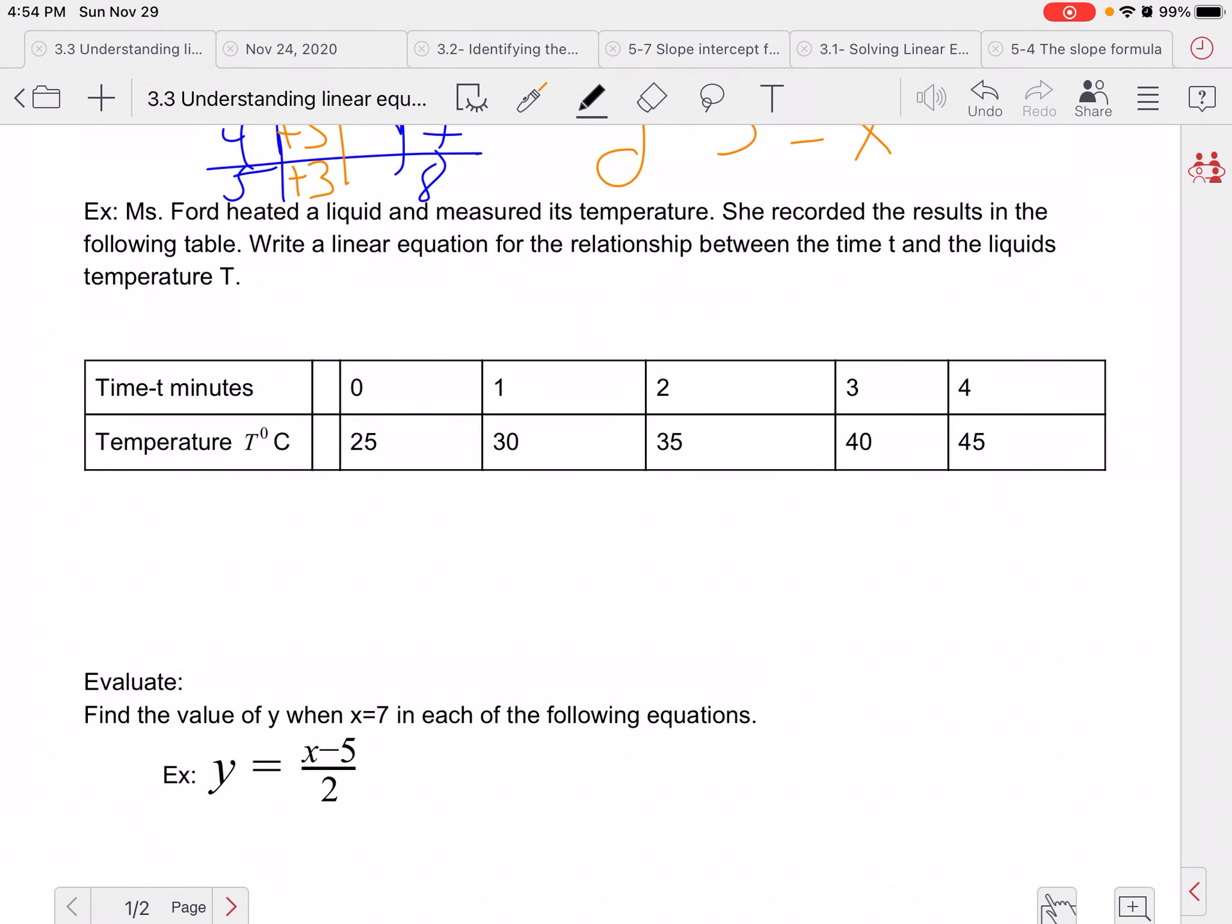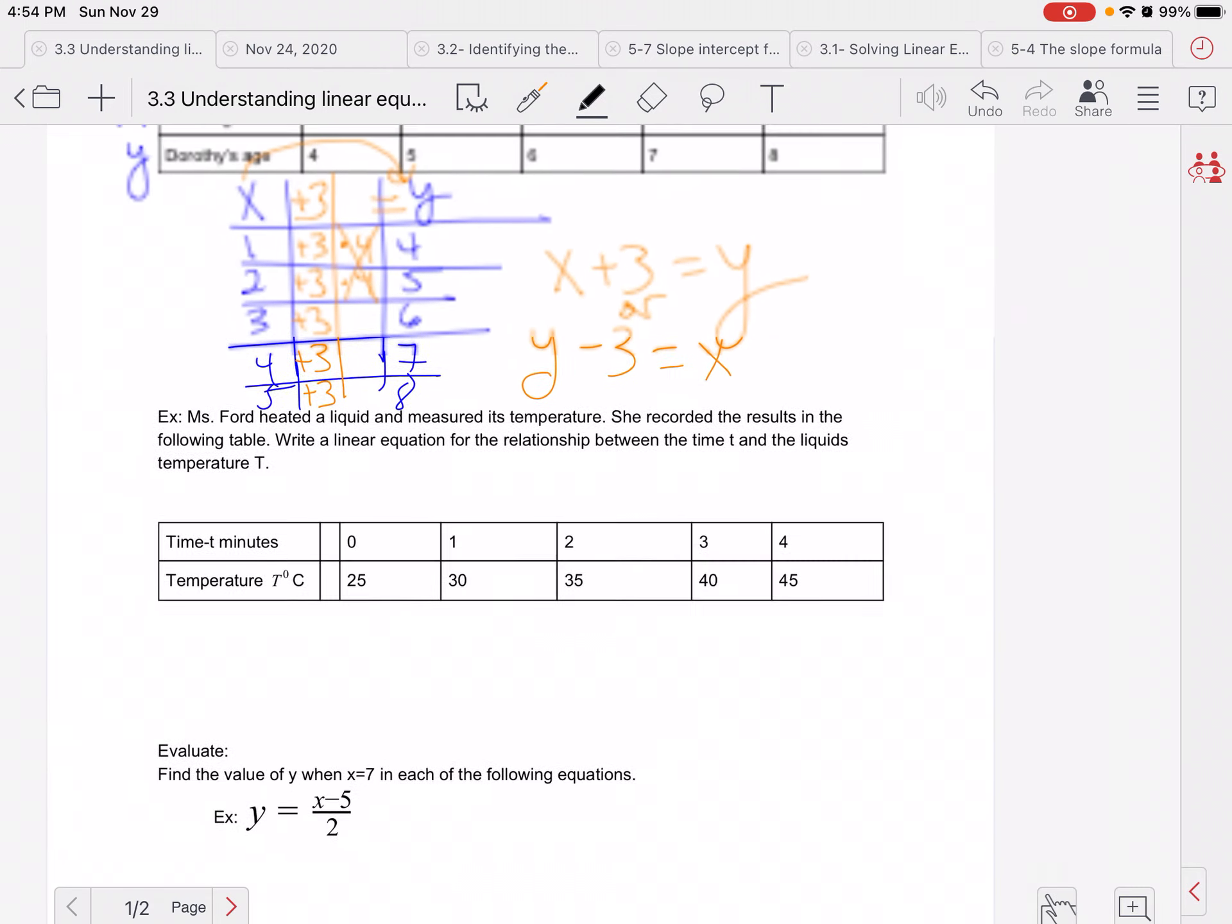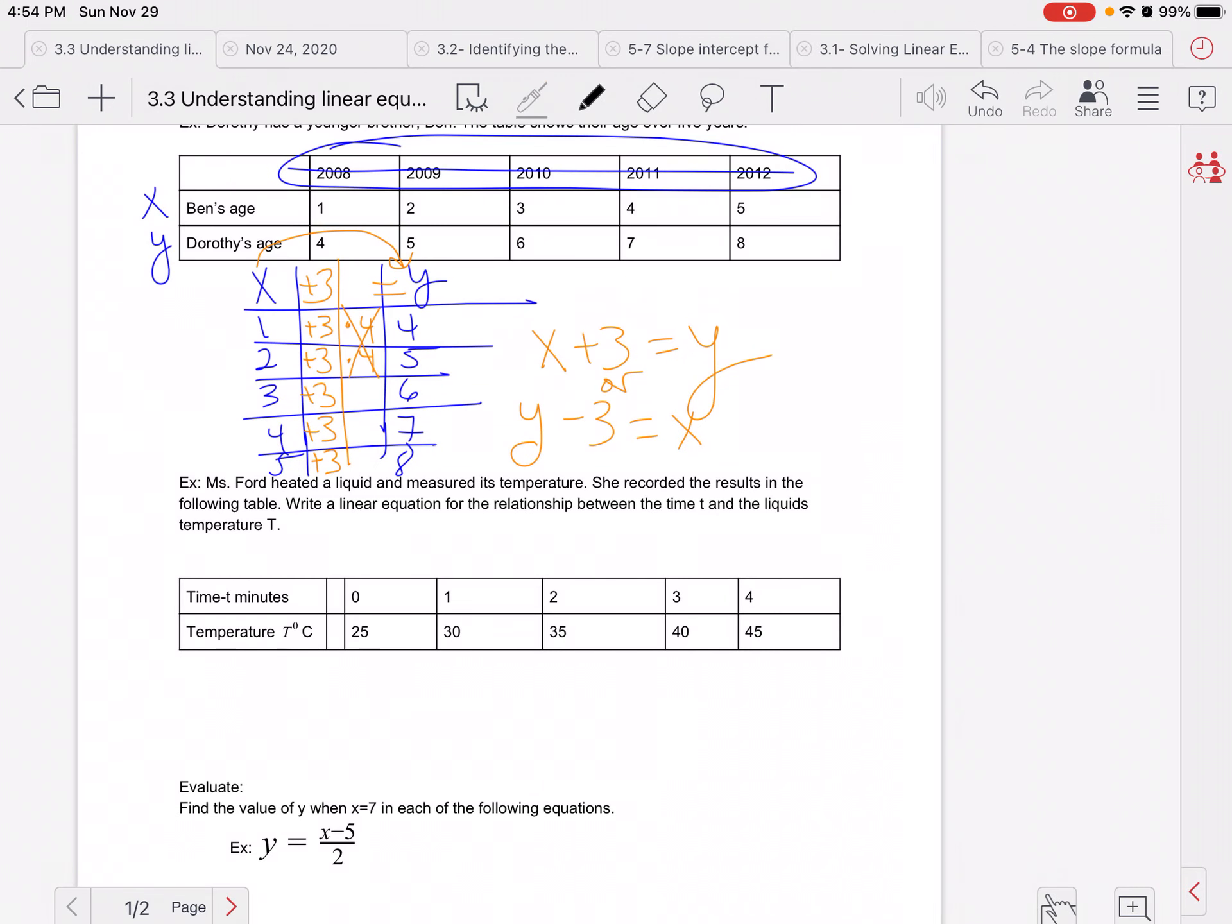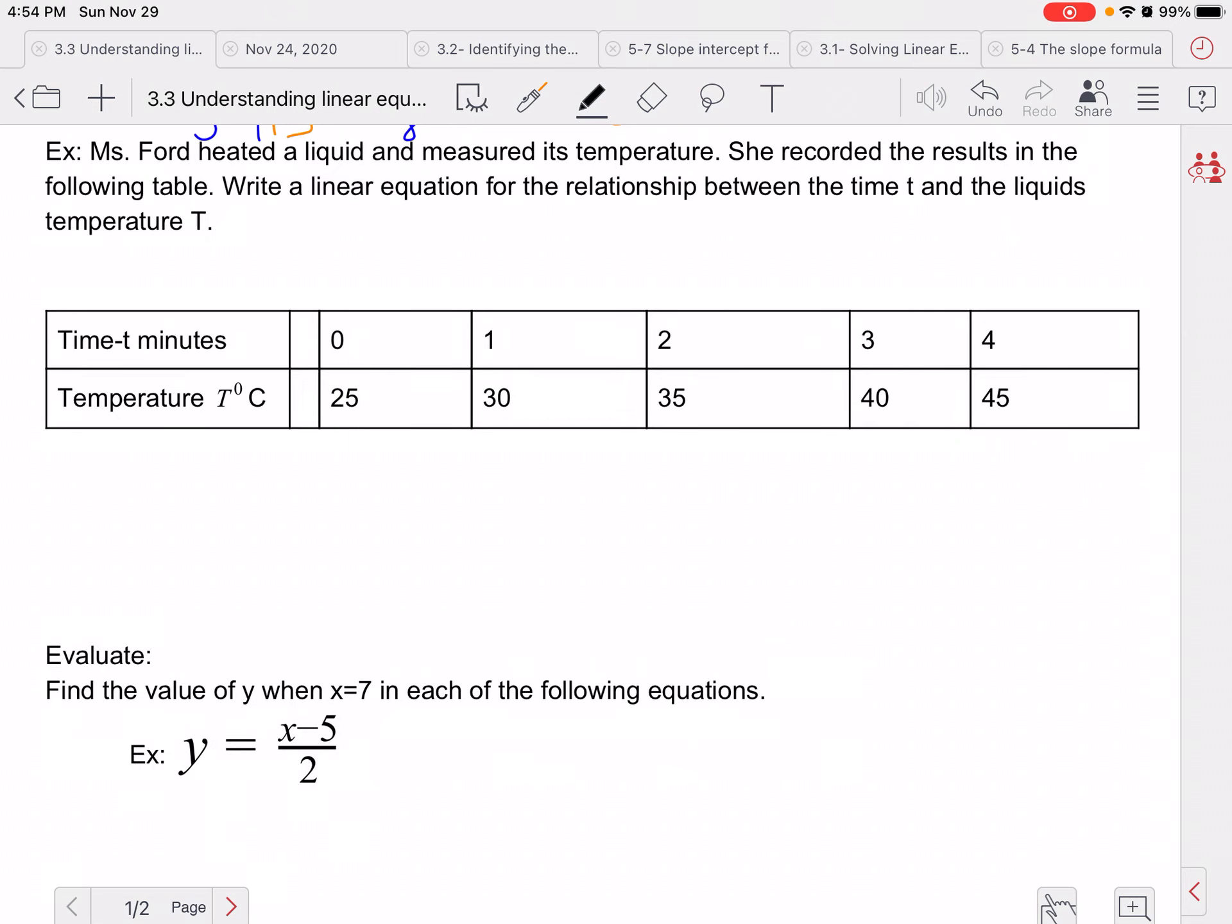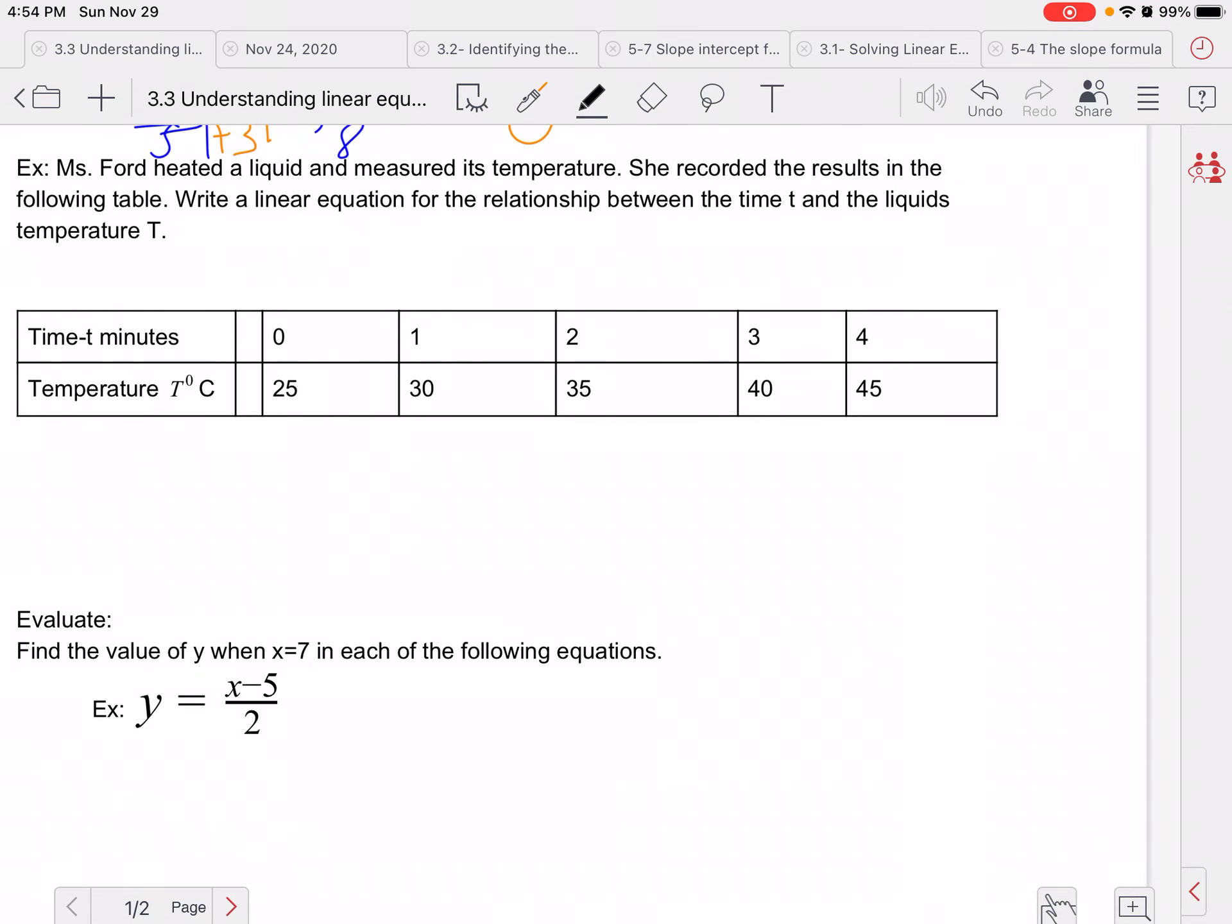So Ms. Ford heated a liquid and measured its temperature. She recorded the results on the following table. Write a linear equation for the relationship between the time T and the liquid's temperature T. Now this one's a little different compared to this other one. See how we're not starting at a zero point, but we are starting at a zero point here? That's what we'll call the Y-intercept later on in this chapter. Actually, next chapter.